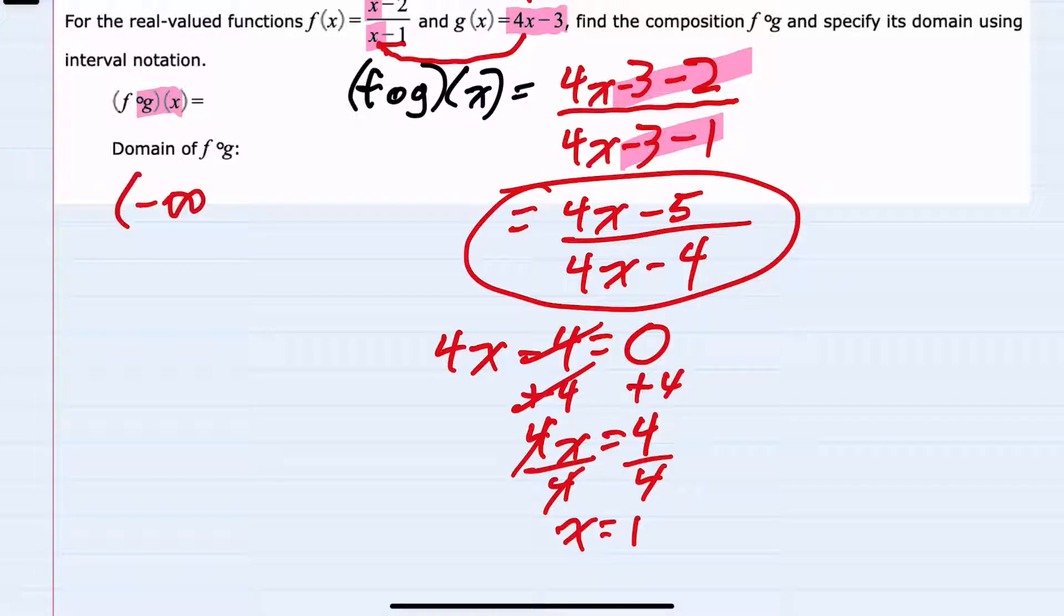So my domain would be negative infinity to 1, not including 1, and a union with 1 not included to positive infinity.